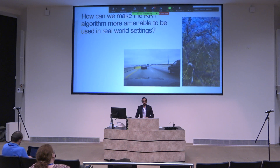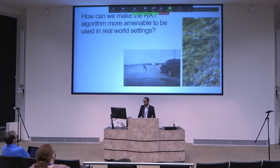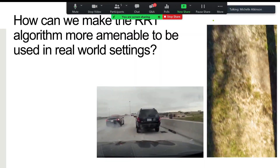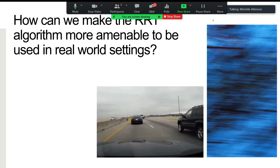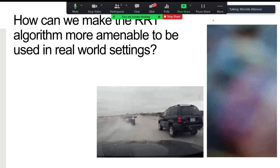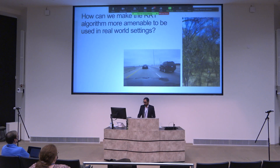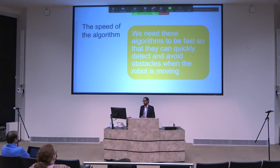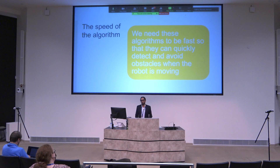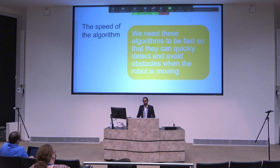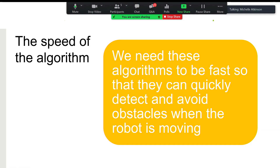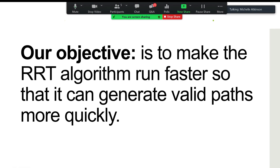Robotic motion planning algorithms have shown success in theoretical contexts, but how do we make them more amenable for production use? We're still seeing Teslas crashing and drones getting stuck in trees. The main idea is that we want to increase the speed of these algorithms — they're fast, but we want them to become faster, giving them more time to calculate a valid collision-free path, avoid crashing, and bring humans to their destination safely.